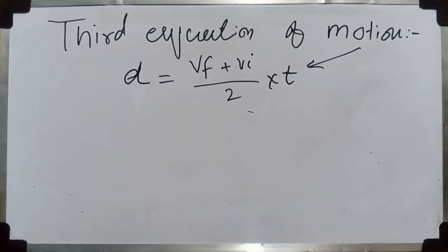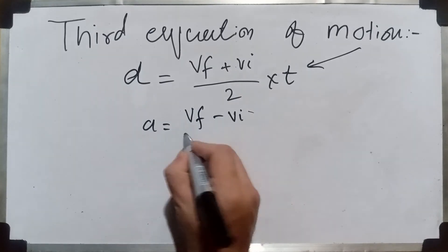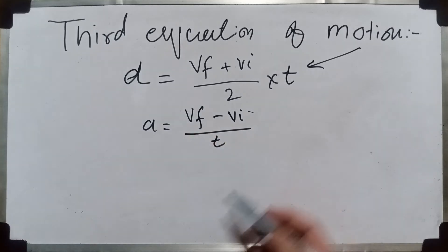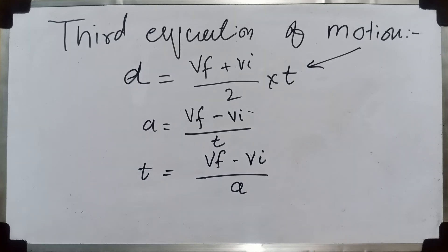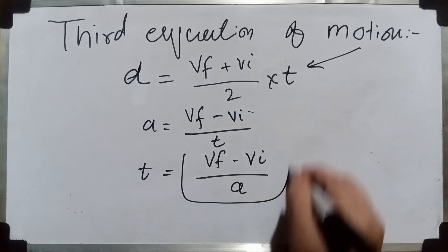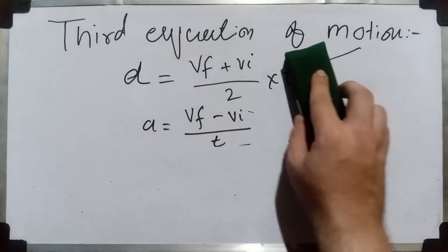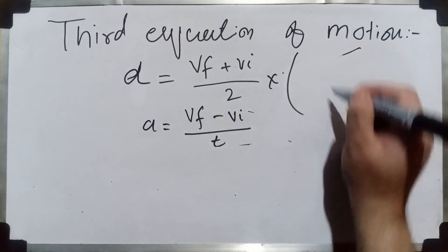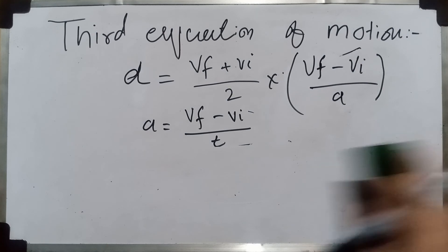We want to eliminate T without introducing irrelevant variables. The relevant equation is the formula for acceleration: the difference between velocities divided by time. We can rearrange this so that time equals the difference in velocities divided by acceleration. Then we substitute this expression for time into the distance equation.